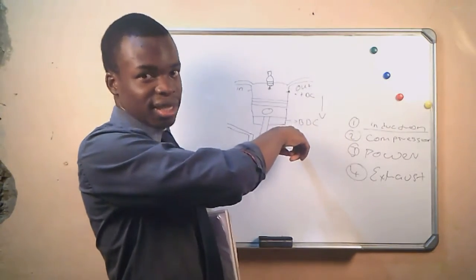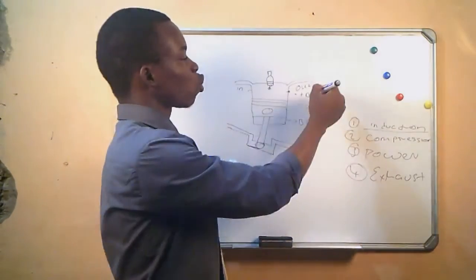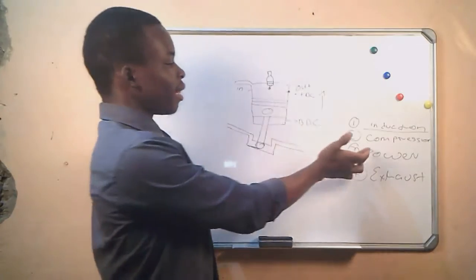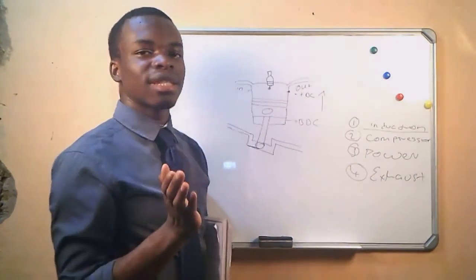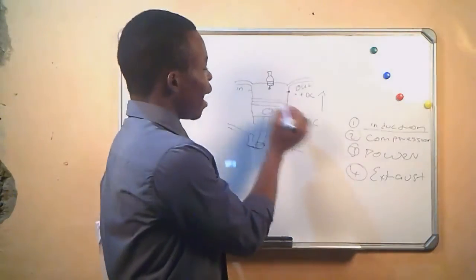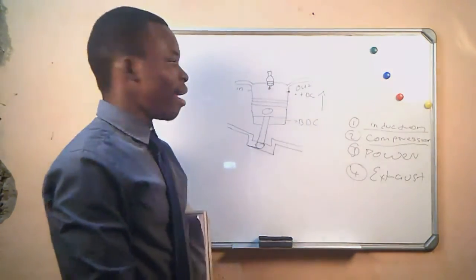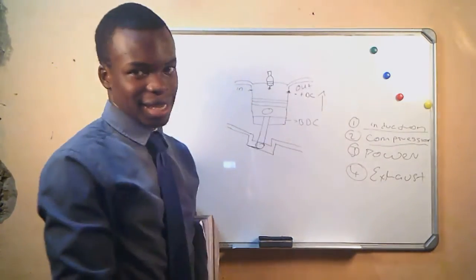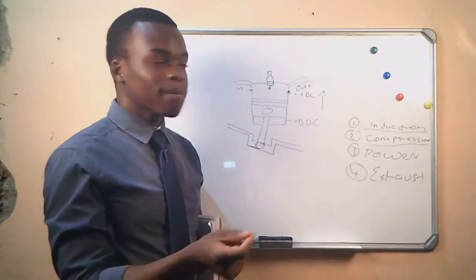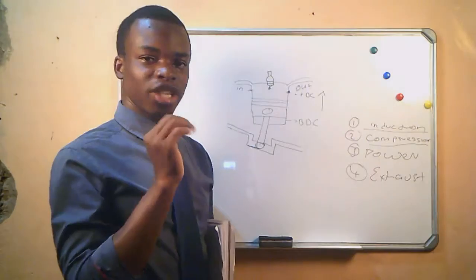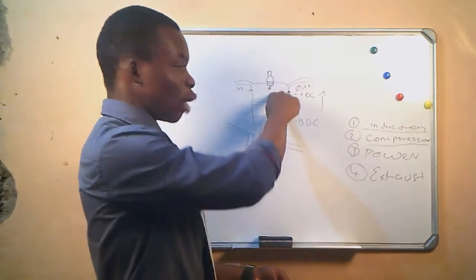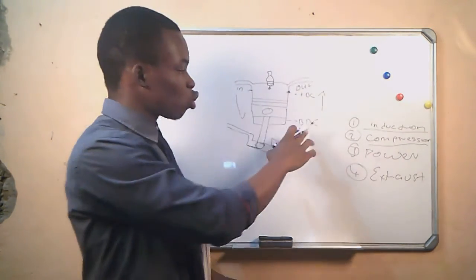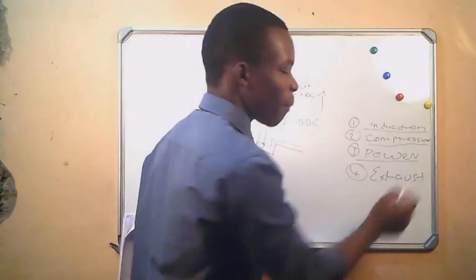We call that the first stroke, which is induction. The piston is now at the bottom dead center and starts moving up. Both valves are now closed and the fuel mixture inside the chamber is now compressed — we call this the compression stroke. Just before the piston reaches its top dead center, the spark plug will ignite, and because the mixture of air and fuel is now compressed, there will be an explosion inside the chamber.